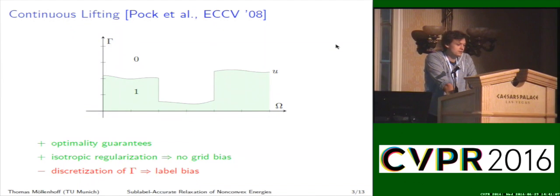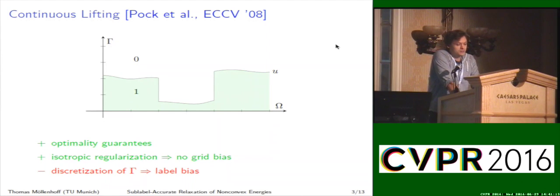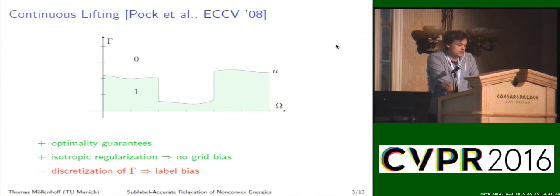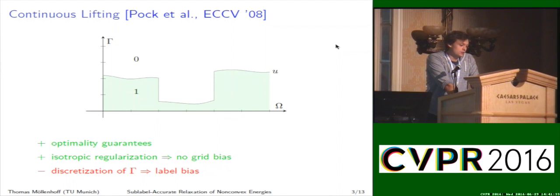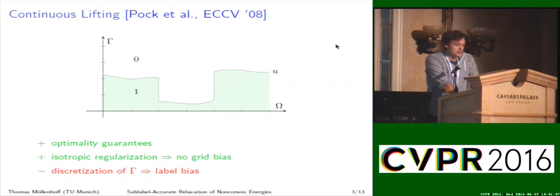Subsequently, this construction from Ishikawa was generalized to the continuous setting by Pock in 2008. The idea is similar: one optimizes over the product space omega times gamma, but instead of having a discrete graph construction, one optimizes over a continuous function which encodes the graph of the original function. It maps from omega times gamma to {0,1}. One can prove similar optimality guarantees, and due to the continuous formulation, one can also perform isotropic regularization, which eliminates the grid bias. But eventually, one still has to discretize the range gamma, so there is still a label bias.